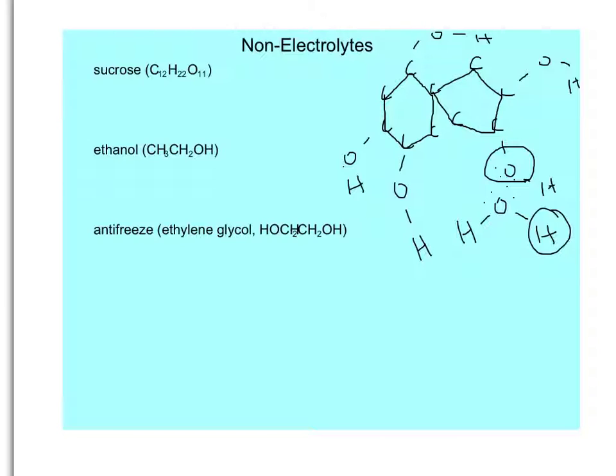Water molecules surround this entire molecule of sucrose. They surround the whole thing. But the point is that, yes, the sucrose dissolves. One sucrose molecule separates from another. But the molecule itself does not break apart. It stays intact. And when it stays intact, that means that it does not produce ions in solution. And that's what makes sucrose a non-electrolyte.